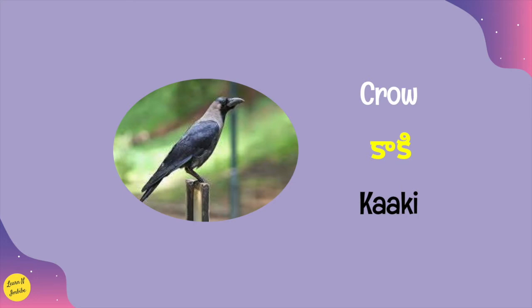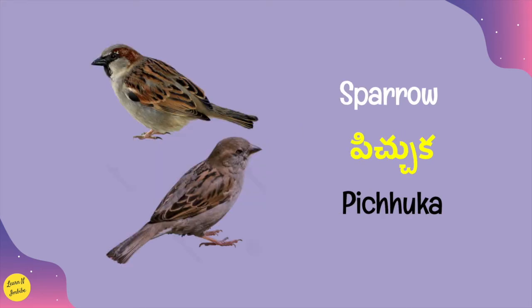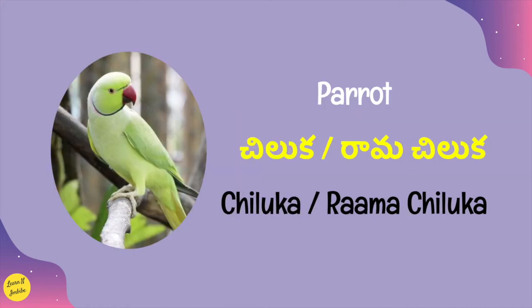The words mentioned in black are to help you easily understand the Telugu word and pronounce it correctly. Sparrow is known as 'pichuka' — P-I-C-H-H-U-K-A — pichuka. Parrot in Telugu has two names: 'chiluka' or 'ramachiluka' — C-H-I-L-U-K-A, chiluka, or R-A-A-M-A, ramachiluka — C-H-I-L-U-K-A. So either you can call it chiluka or ramachiluka.